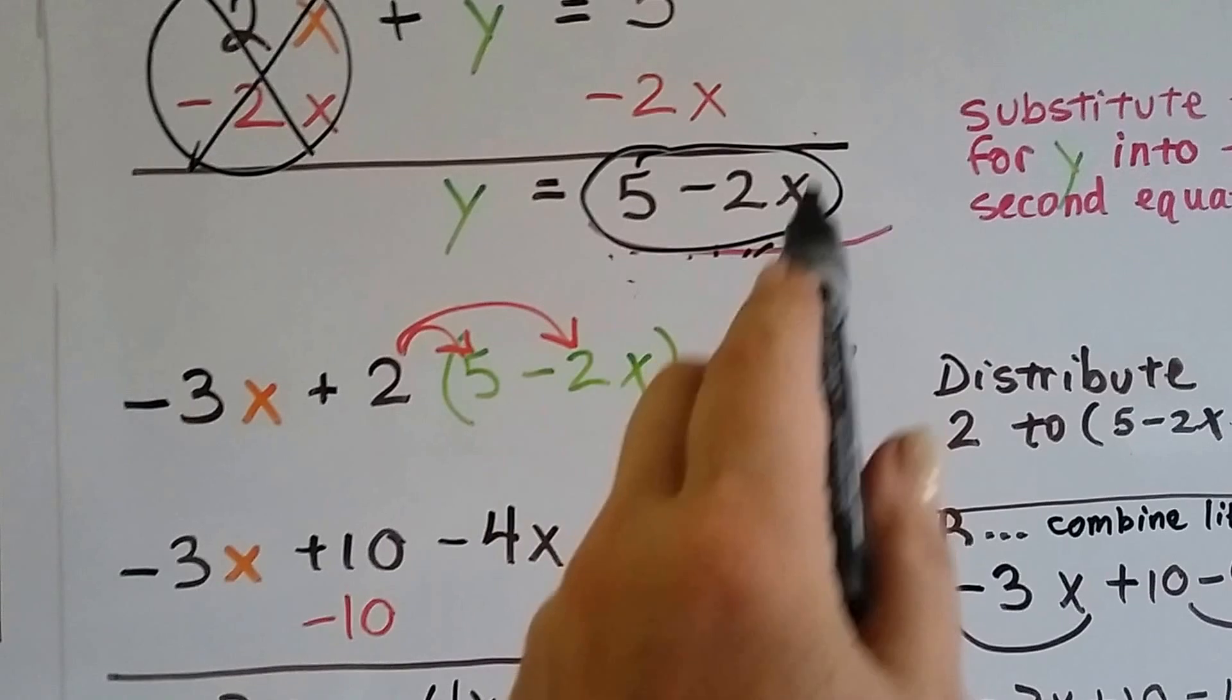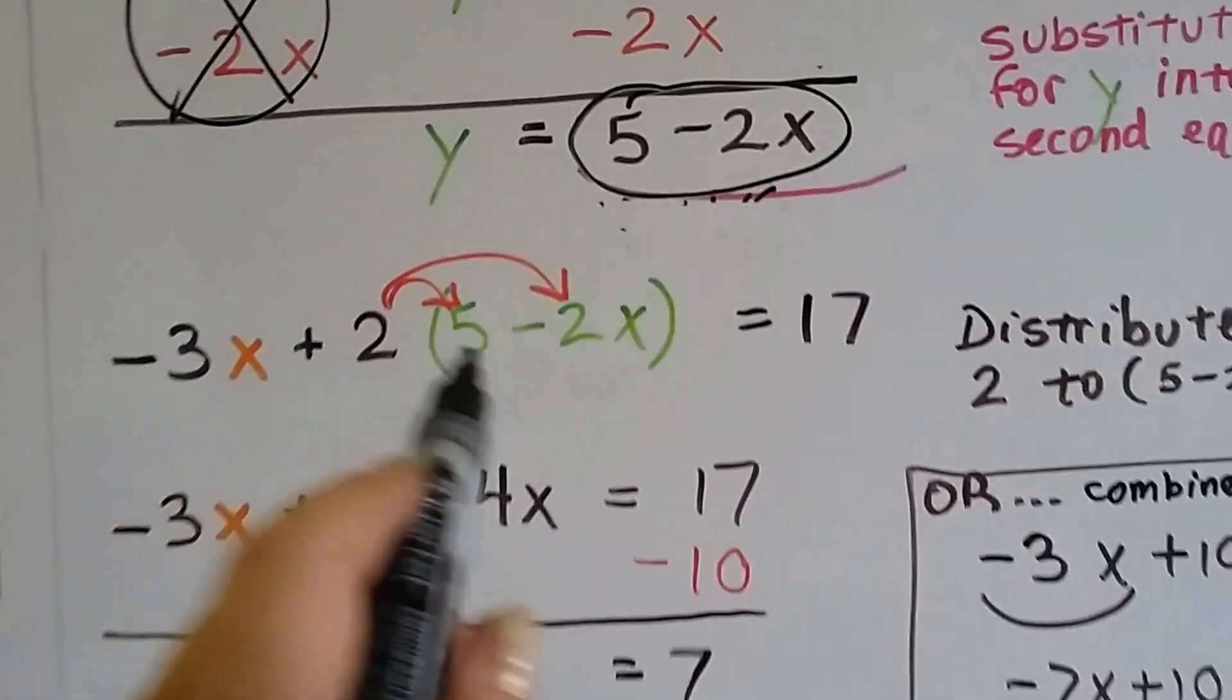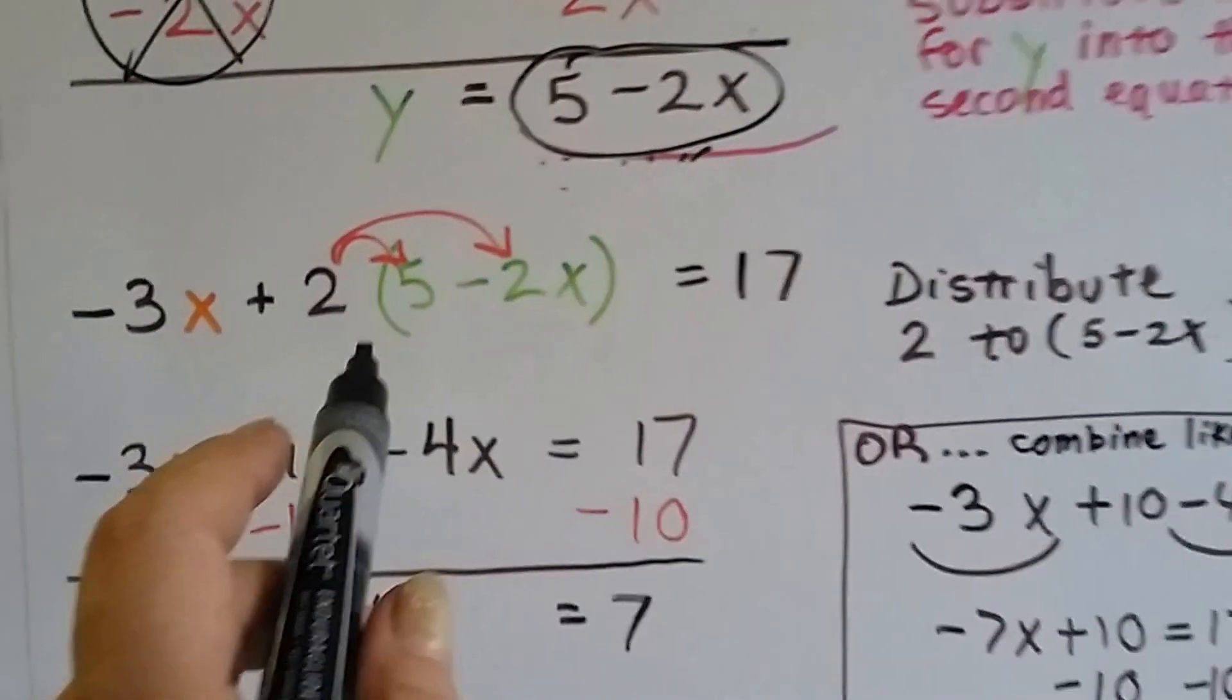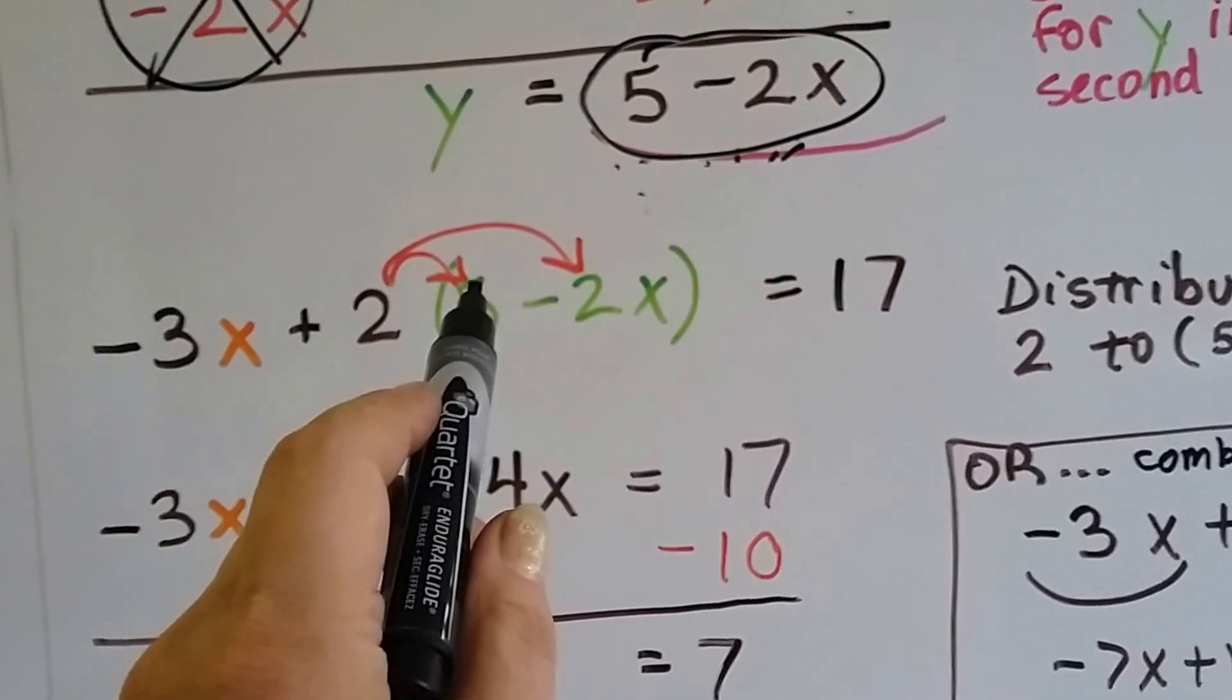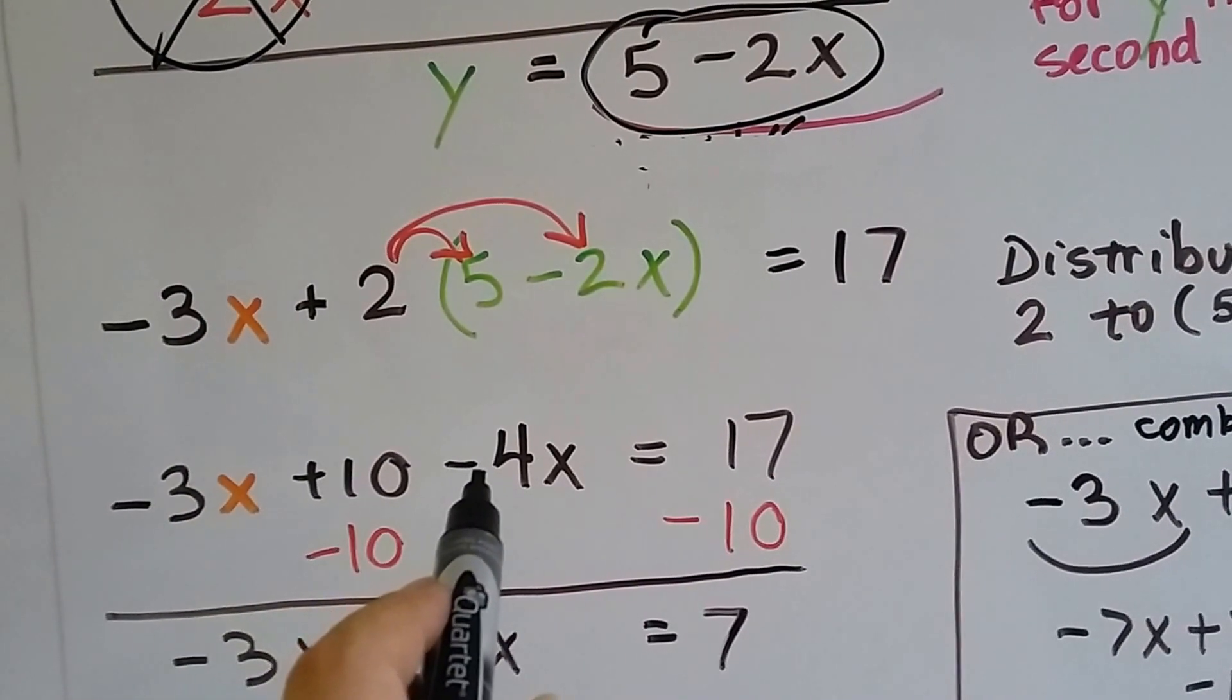So here it is, we're going to put this whole thing to be y. So I throw it in here. So now I've got to use the distributive property. So I've got 2 times a positive 5, that's a 10, and I've got 2 times a negative 2x, that's a negative 4x.